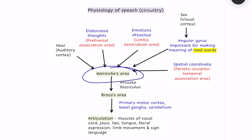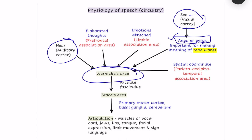Let us go into details of these with the help of a flowchart. Wernicke's area is important for comprehension of speech. For comprehending something, first you need to perceive what you are about to comprehend. Wernicke's area receives information from many other areas, including the auditory cortex. It is located just behind the auditory cortex, which helps since as children we start hearing speech first. There is also information from the visual cortex, which passes to the angular gyrus. The angular gyrus is important for making meaning of the read words — that is, understanding the meaning of printed words — and that information also goes to Wernicke's area.